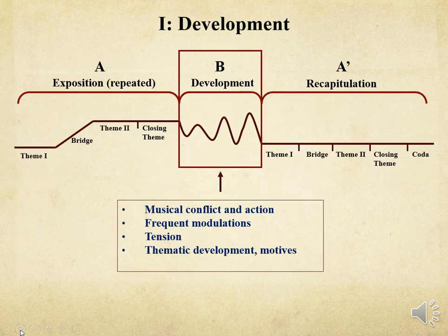The second section in sonata allegro form is the development, which is filled with conflict and action. The development wanders through many foreign keys, which build tension, and the main themes are varied, expanded, contracted, broken apart, and recombined in new ways. Towards the end of the development, there is a retransition that leads into the next section, called the recapitulation.